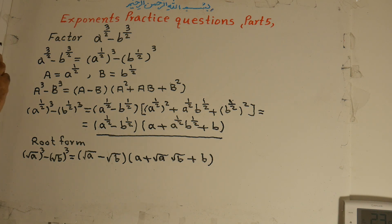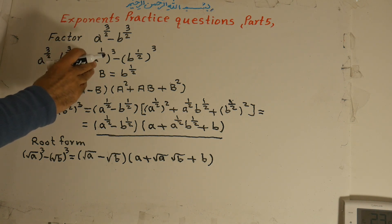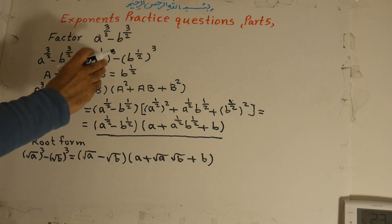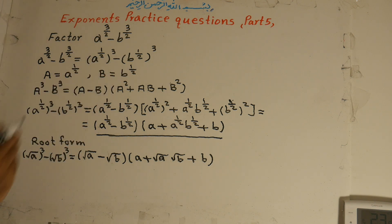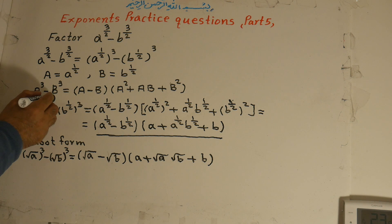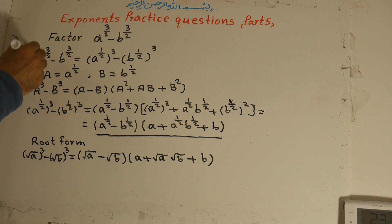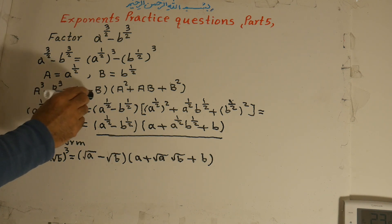To recap: exponents practice questions, part 5. Factor a to the power of 3 over 2 minus b to the power of 3 over 2. This equals a to the power of 1 over 2, all to the power of 3, minus b to the power of 1 over 2, all to the power of 3. We substitute a to the power of 1 over 2 as capital A and b to the power of 1 over 2 as capital B, giving A cubed minus B cubed.